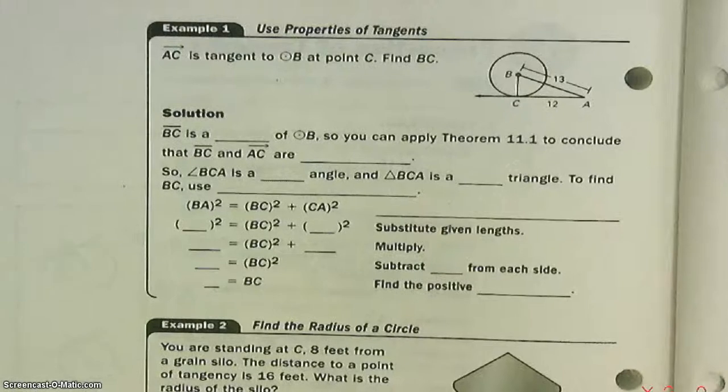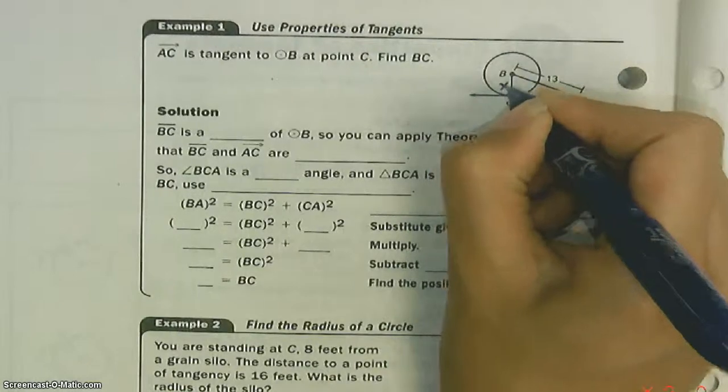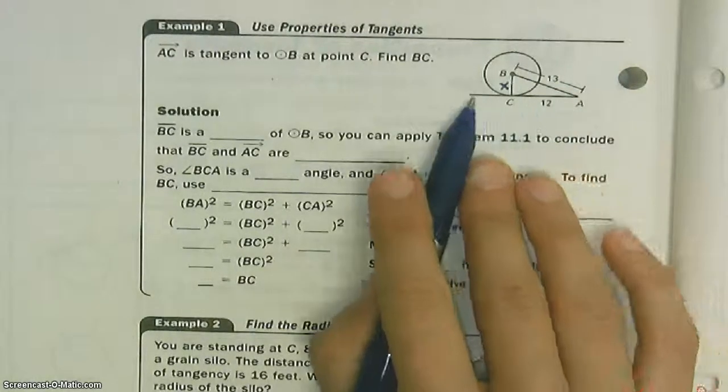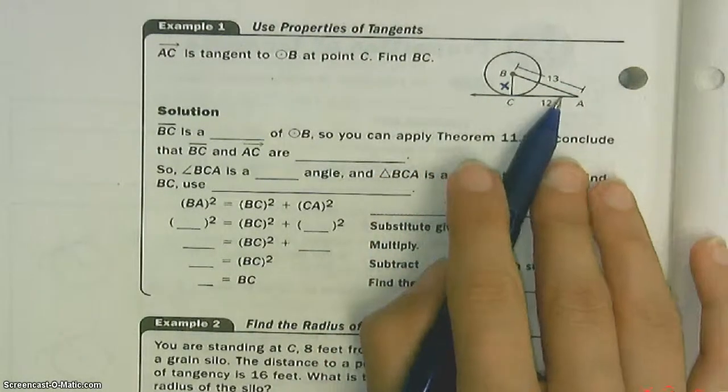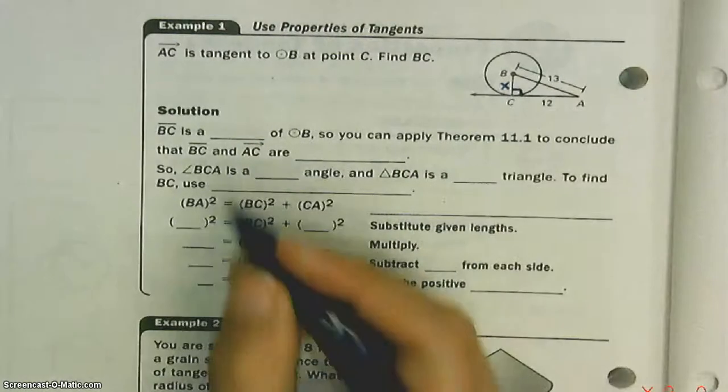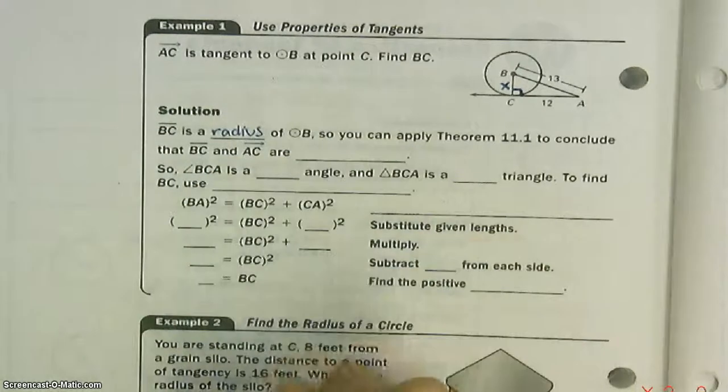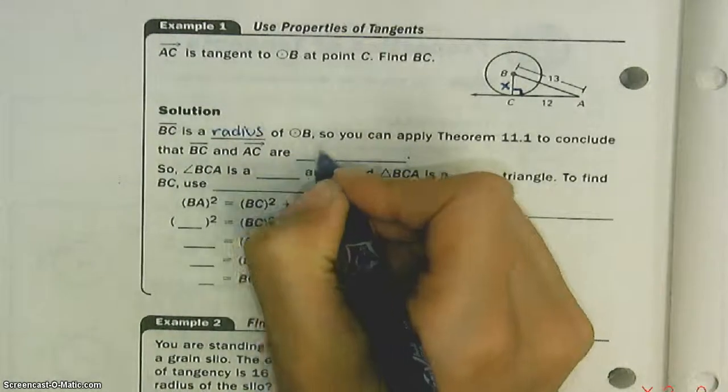Example 1: AC is tangent to circle B at point C. Find BC. We're trying to find this length right here. We just learned, if a line is tangent to a circle, then it's perpendicular to the radius. BC is a radius, so you know they are perpendicular.